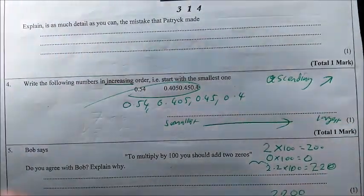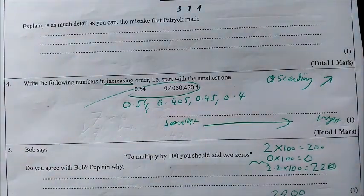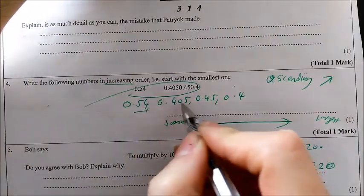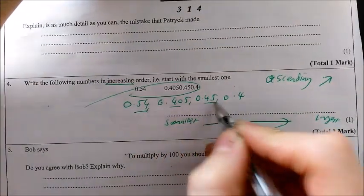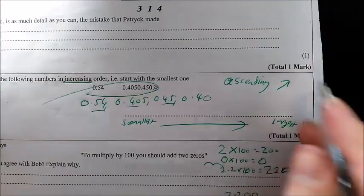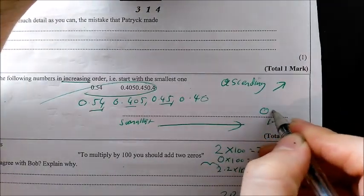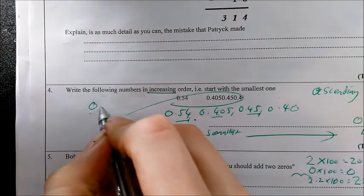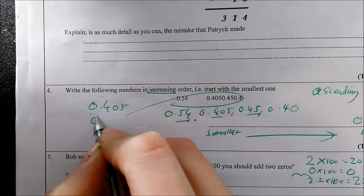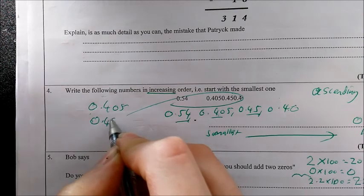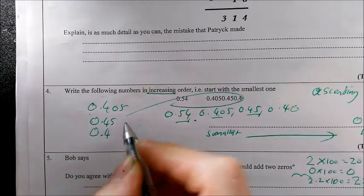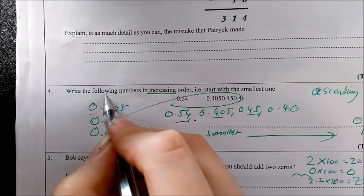0.54, 0.405, 0.45, and 0.4. Now there are two ways I could solve this. Firstly, you could use money to help you solve this one. So what I mean is, have a look: 54p, 40p, 45p, and 40p. Which would I rather have? I'd rather have 54p. So that's the largest number. Then, all of these are pretty similar. So I'm going to write them above each other like this.